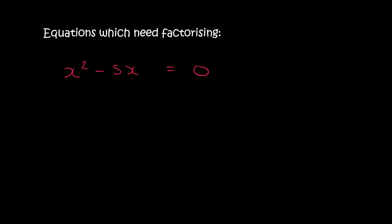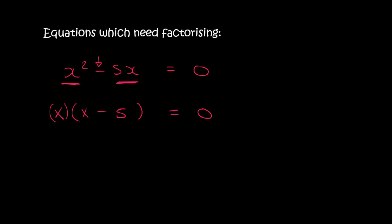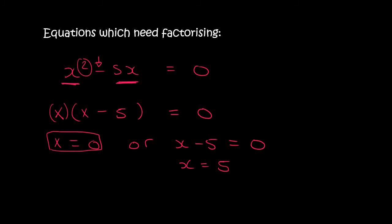What type of factorizing is this next one? It's not a difference of squares — although it has two terms separated with a minus, the second term is not a perfect square. It's not a trinomial because that's three terms, and not a grouping because that's four terms. So it's the simplest type you should always try first: common factor. There's an x squared and an x, so I can take out x, and I'm left with x minus 5. So x equals 0, or x minus 5 equals 0, meaning x equals 5. Two answers.